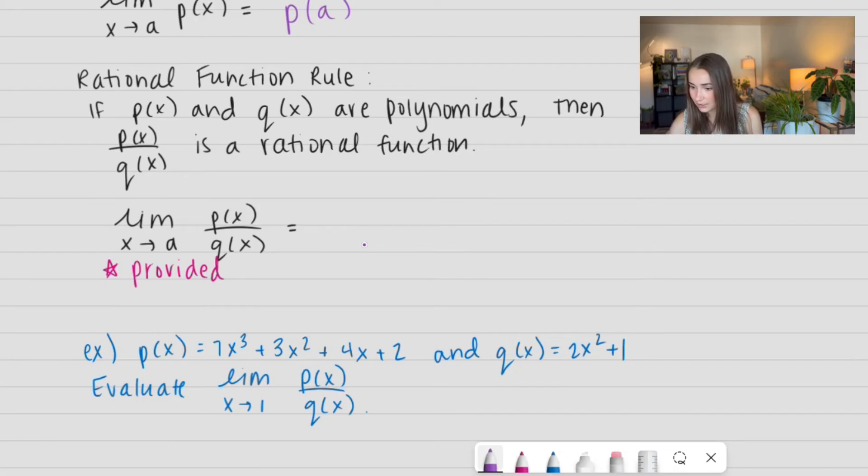So, we have the limit as X approaches A of P of X divided by Q of X is equal to the limit as X approaches A of P of X in the numerator divided by the limit as X approaches A of Q of X in the denominator. This is super similar to the quotient rule.